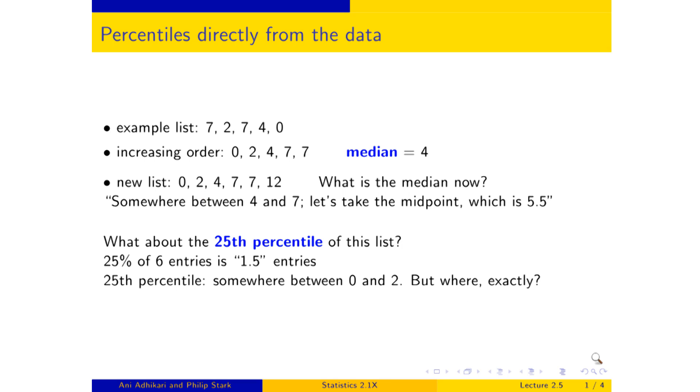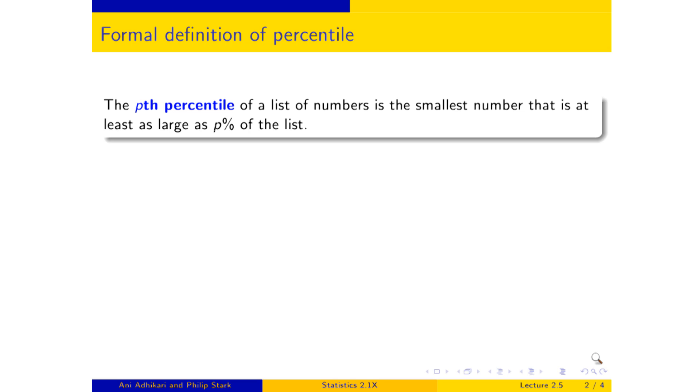And for this, we are very much helped by a formal definition of the percentile, which I will read out to you. Even though I know you can read perfectly well on your screen, I will read it because it's a bit of a mouthful. The pth percentile of a list of numbers is the smallest number that is at least as large as p percent of the list. And I'm going to tell you, when you read that sentence, if your head is swimming a little bit, I don't blame you. It's that kind of sentence. Why don't we try translating that thing into English?